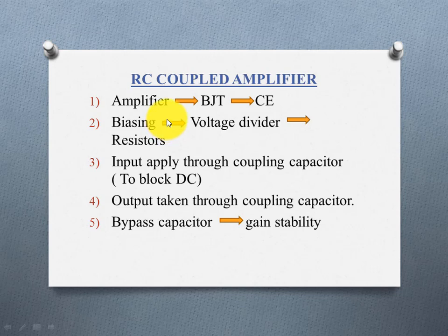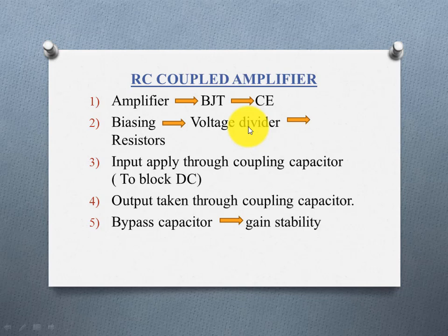The first point: in the RC Coupled Amplifier, the transistor operates in the active region — that means emitter-base forward bias and collector-base reverse bias. Biasing is important; biasing means connecting an external supply. The important type is voltage divider biasing. The external supply is connected through resistors — that is the second point.